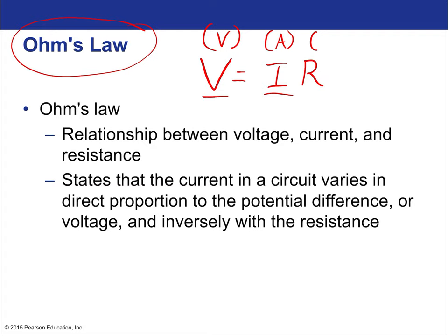Solving for current: I = V/R. For constant resistance, current will be twice as much for twice the voltage. For twice the resistance and twice the voltage, the current will be unchanged. So if you double the voltage in a simple electric circuit, you double the current — that's a straightforward application of Ohm's law.